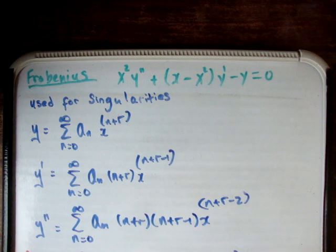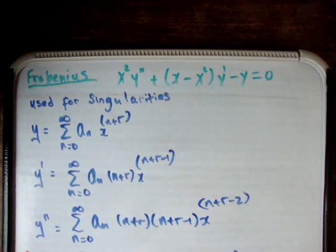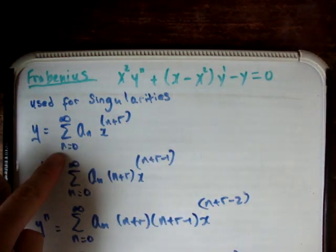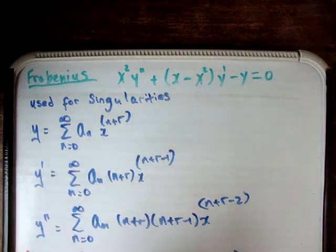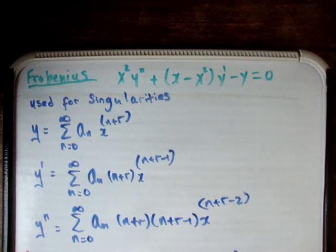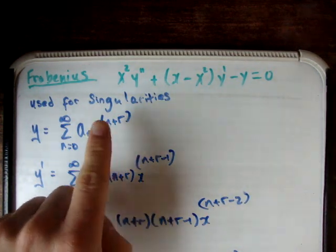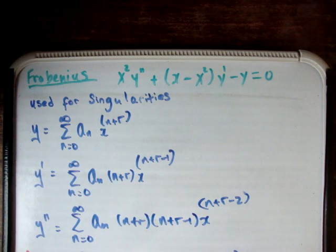The next thing is, the actual power series used is different. It's now x to the n plus r. So we have y equal to the sum from 0 to infinity of aₙ times x to the n plus r. Whereas in the usual solutions for differential equations using power series, you just use x to the n. As normal, I've differentiated to get y prime and y double prime — something very straightforward.